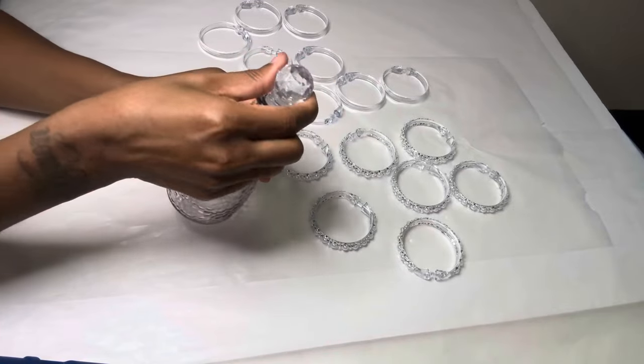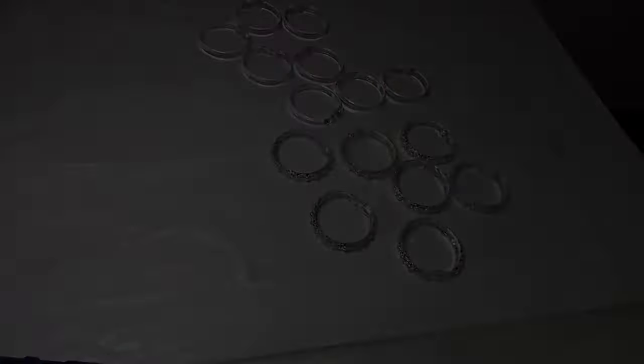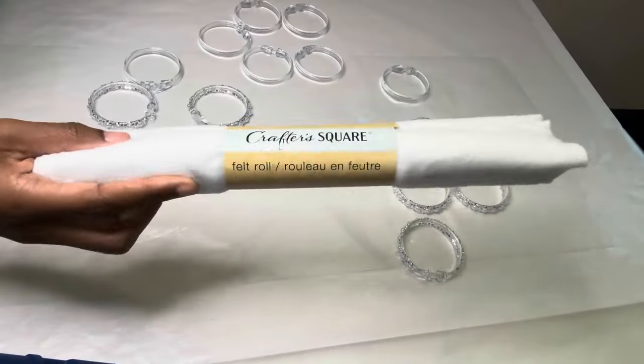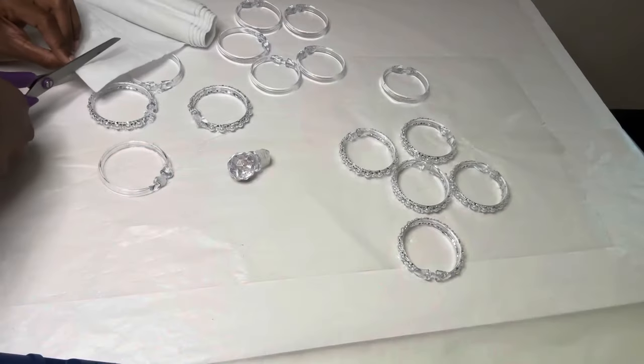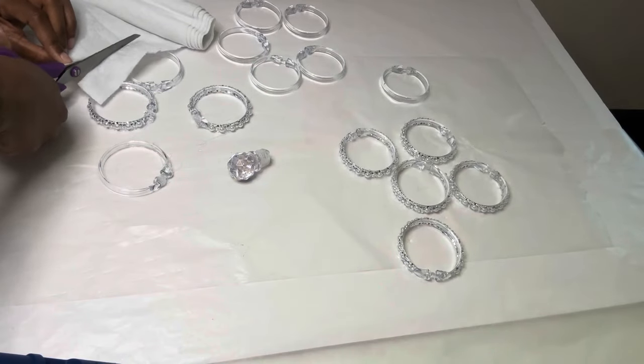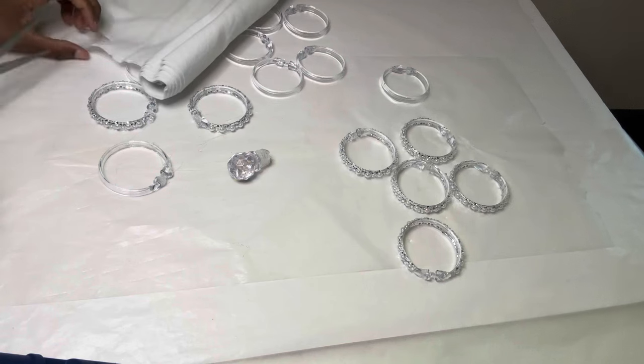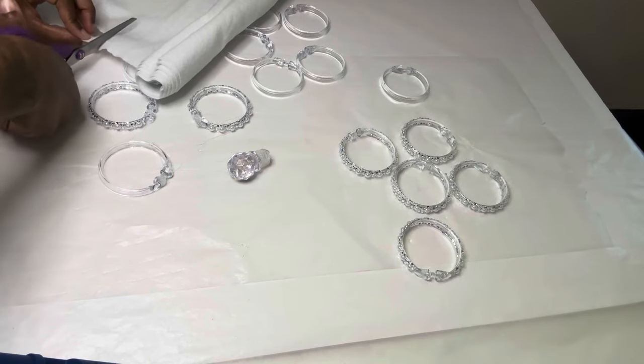So now I'm using this top to this bottle and also a piece of this felt roll. And I'm going to wrap the piece of the felt roll around the top so that way the shower curtain rings can stick better.